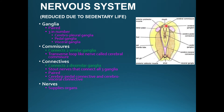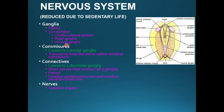Ganglia are paired — there are three pairs: Cerebral ganglia, Pedal ganglia, and Visceral ganglia. Commissures are transverse loop-like nerves; they connect two similar ganglia together. Connectives connect two different ganglia to each other. Nerves are supplied to the organs.